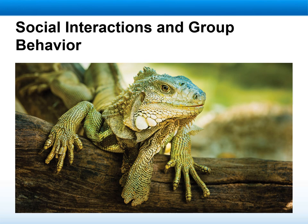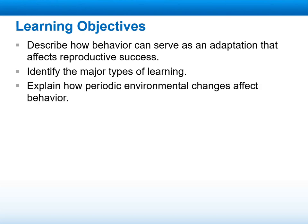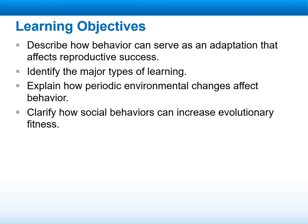Welcome dear students to a new week. This week we will talk about the social interactions and the group behavior of animals. Our learning objectives are to describe how behavior can serve as an adaptation that affects reproductive success, identify the major types of learning, explain how periodic environmental changes can affect behavior, and clarify the social behaviors that can increase evolutionary fitness for animals and how they communicate.